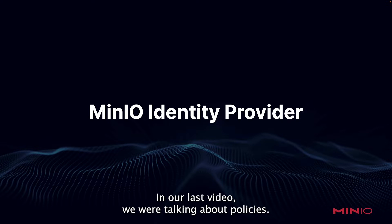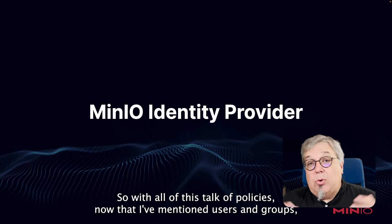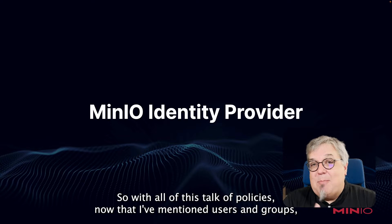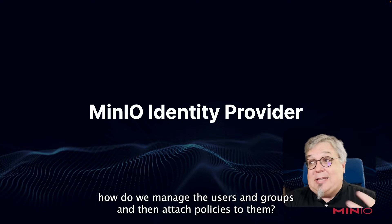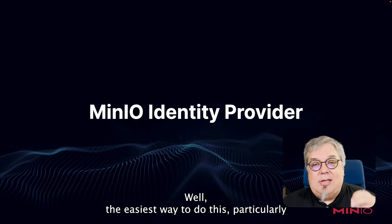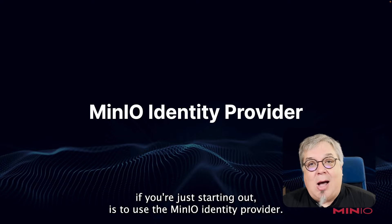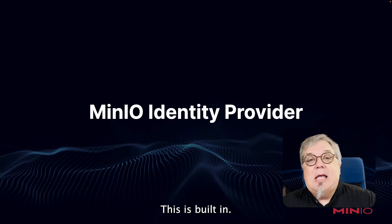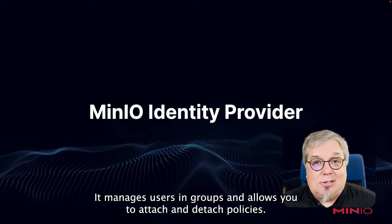Hi folks, Will from MinIO here. In our last video, we were talking about policies. In this video, we're going to talk about how you can use MinIO IDP to manage users and groups. So with all of this talk of policies, now that I've mentioned users and groups, how do we manage the users and groups and then attach policies to them? The easiest way to do this, particularly if you're starting out, is to use the MinIO identity provider. This is built in. It manages users and groups and allows you to attach and detach policies.